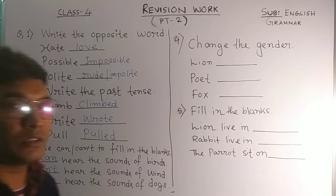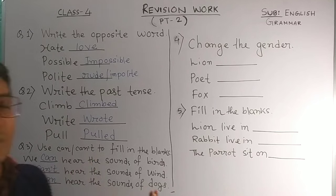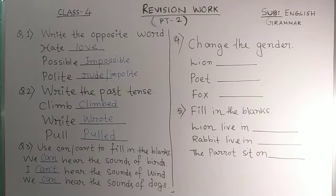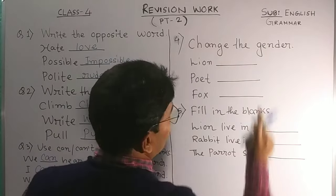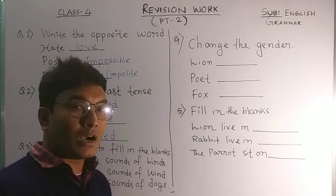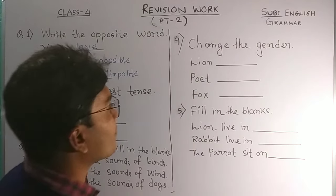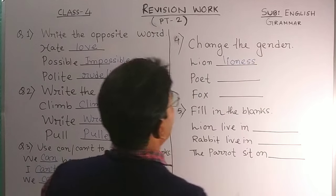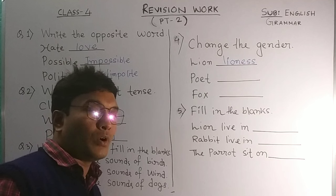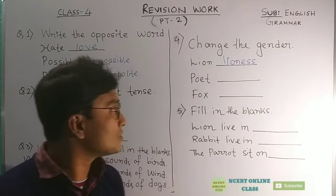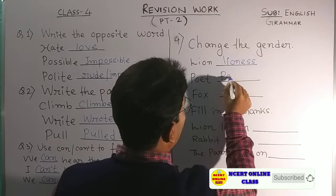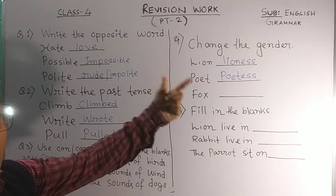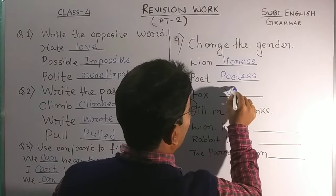These types of exercises will come in our exam, so practice them. The fifth exercise is the gender — like father, mother, aunt, uncle. For 'lion,' the feminine gender is 'lioness.' For 'poet,' you know that — if it is a lady, it is called 'poetess.' For 'fox,' the gender will be 'vixen.' Remember these types of words, they are very important.